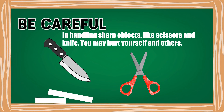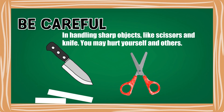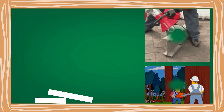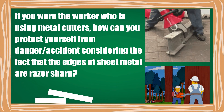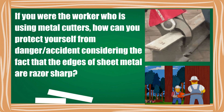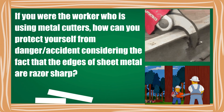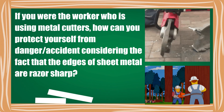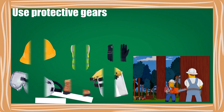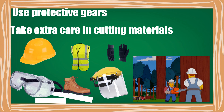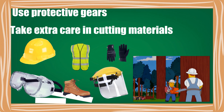In handling sharp objects like scissors and knife, be careful because you may hurt yourself and others. If you were the worker using metal cutters, how can you protect yourself from danger and accident, considering that the edges of sheet metal are razor sharp? Of course, you are going to use protective gears, and you have to take extra care in cutting materials.